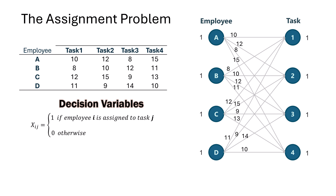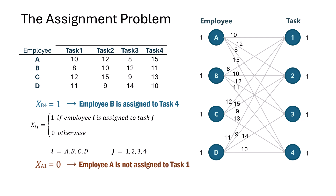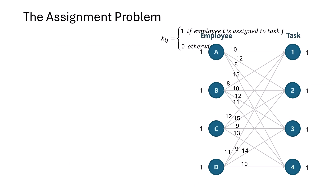Here, i represents employees A, B, C, D, and j represents tasks 1, 2, 3, 4. For example, if x_b4 equals 1 in the solution, it means employee B is assigned to task 4. And if x_a1 equals 0, it means employee A is not assigned to task 1.